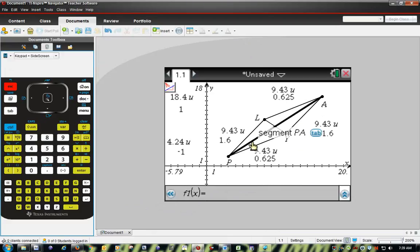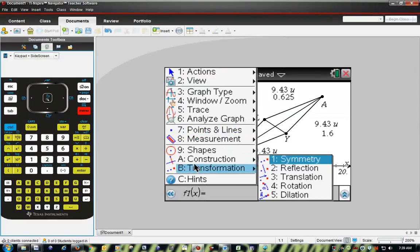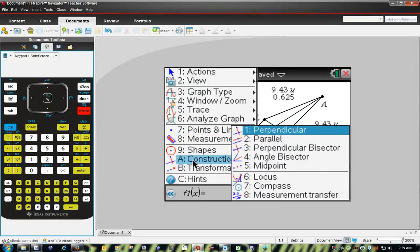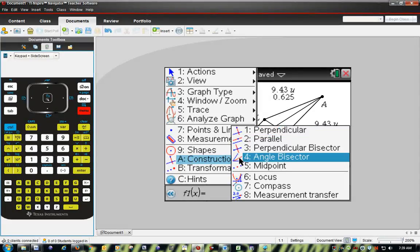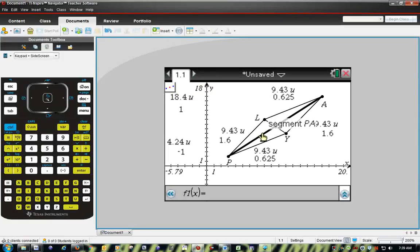And I need midpoints of the two diagonals. So, for menu, midpoints are under construction. Go under construction. Go to midpoint. If we go up to here, it says just click on the segment that we want a midpoint for. This is for segment PA. Click on that, I get my midpoint right there. For segment LY, I got my midpoint right there.